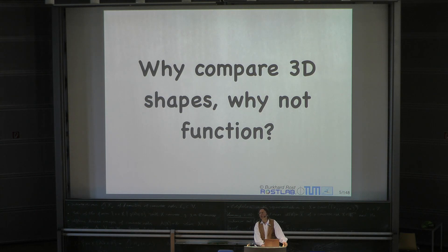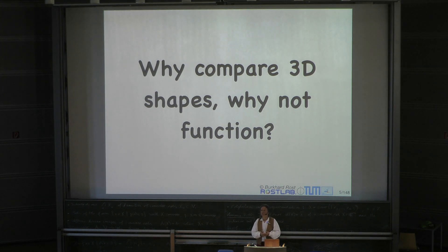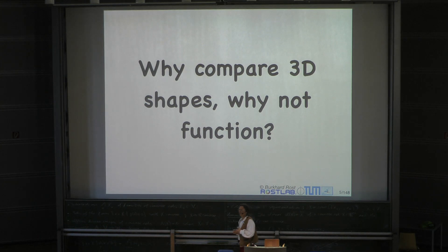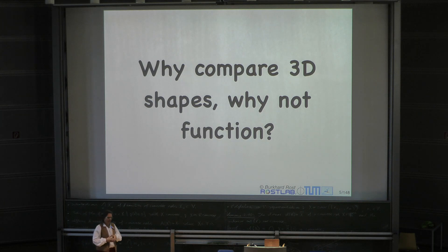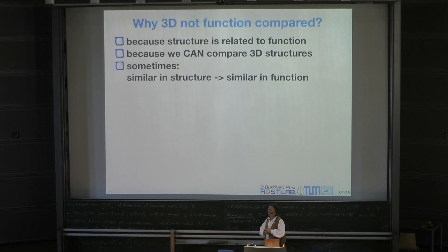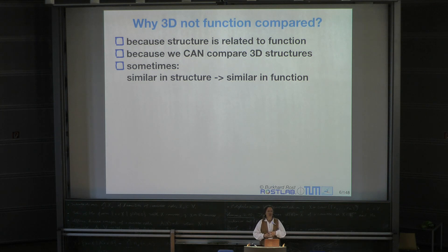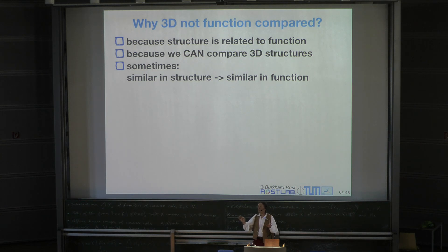So if function is what we are after, why don't we compare function? Why do we go through the sort of detour of comparing structures? Maybe it's just that structure is easier to grab and identify? That's indeed exactly the answer. Structure is easier—we know structure relates to function, and structure is easier to describe. It's a three-dimensional object; for every single point we have a coordinate point in space, and we know how to compare them.